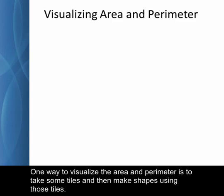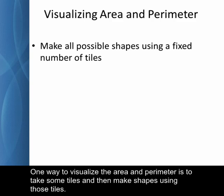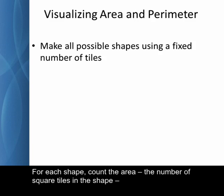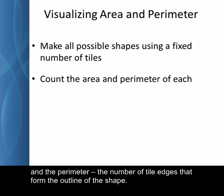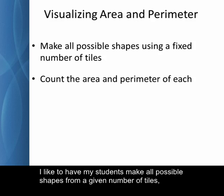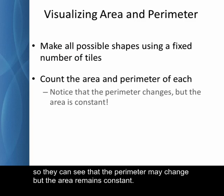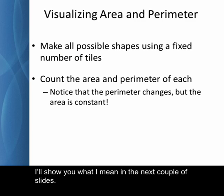One way to visualize the area and perimeter is to take some tiles and then make shapes using those tiles. For each shape, count the area, the number of square tiles in the shape, and the perimeter, the number of tile edges that form the outline of the shape. I like to have my students make all possible shapes from a given number of tiles so they can see that the perimeter may change but the area remains constant.